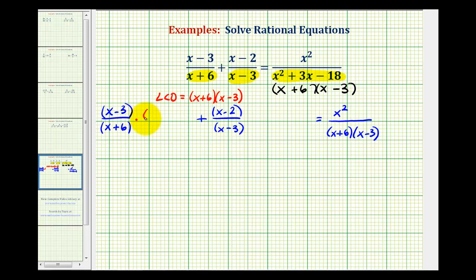And now we'll multiply each fraction by the LCD, so we'll have times the quantity x plus six, times the quantity x minus three. We'll put this over one. It's not required to do this, but it will make it easier to see what's going to simplify out. And now we'll do the same to the other two fractions.